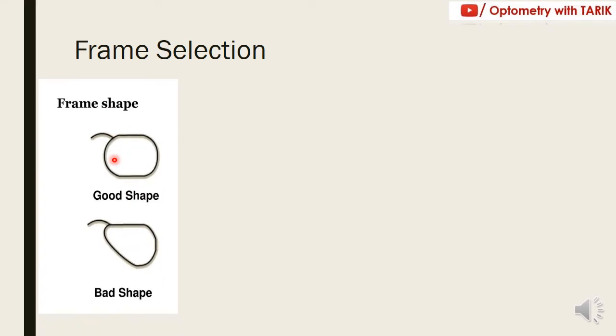The first key point in dispensing is selection of the frame. Since it is a progressive addition lens, you have to ideally select a particular frame. The first key factor is the frame shape — it is always better to go for a pentagonal or box-type shape, which will have all areas covered. If you take an aviator-shaped frame, there is a high chance that the reading area, which is slightly nasal offset, can get cut out, reducing the amount of visual field required to see clearly.